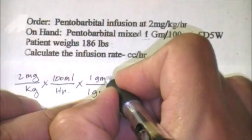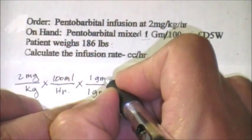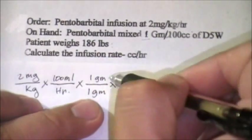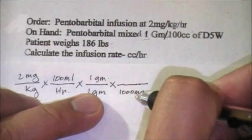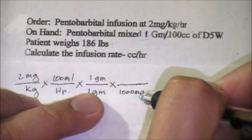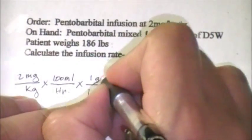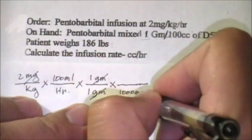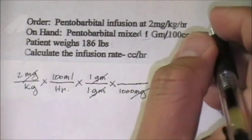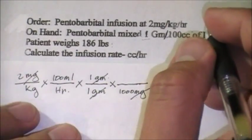The gram here is the one that we use to convert and cancel milligrams. So 1 gram is equivalent to 1000 mg. Now we can cancel gram versus gram, milligram versus milligram.